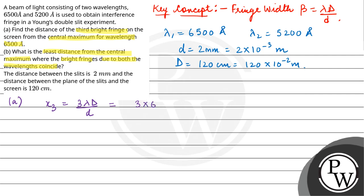So 3 × 6500 × 10^-10 × 120 × 10^-2 upon 2 × 10^-3. Therefore x3 equals 1.17 × 10^-3 meters.